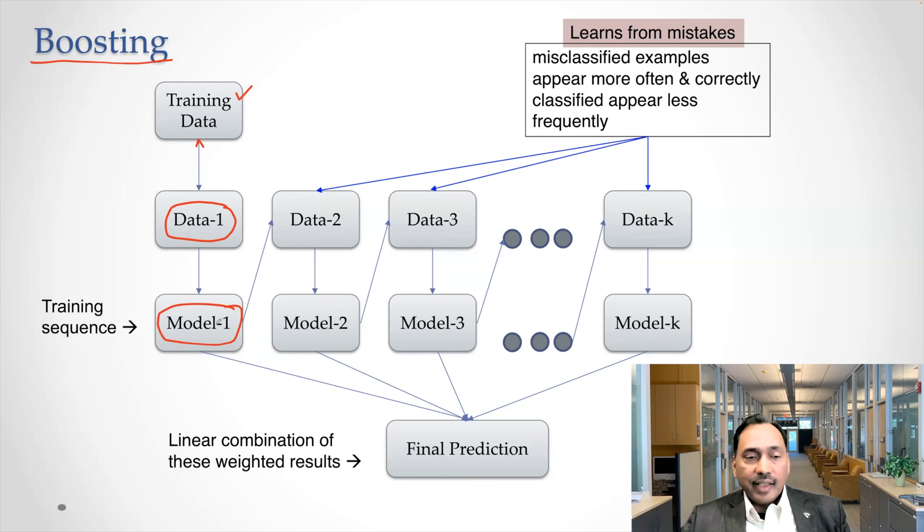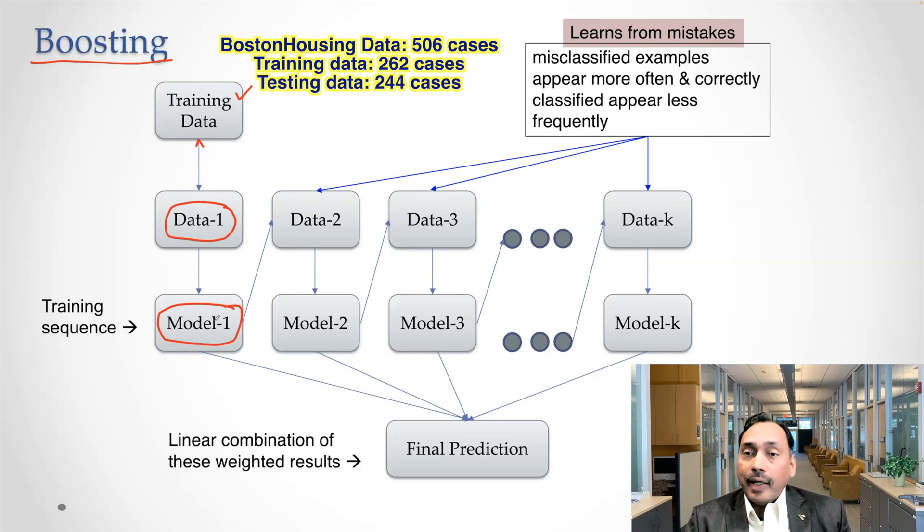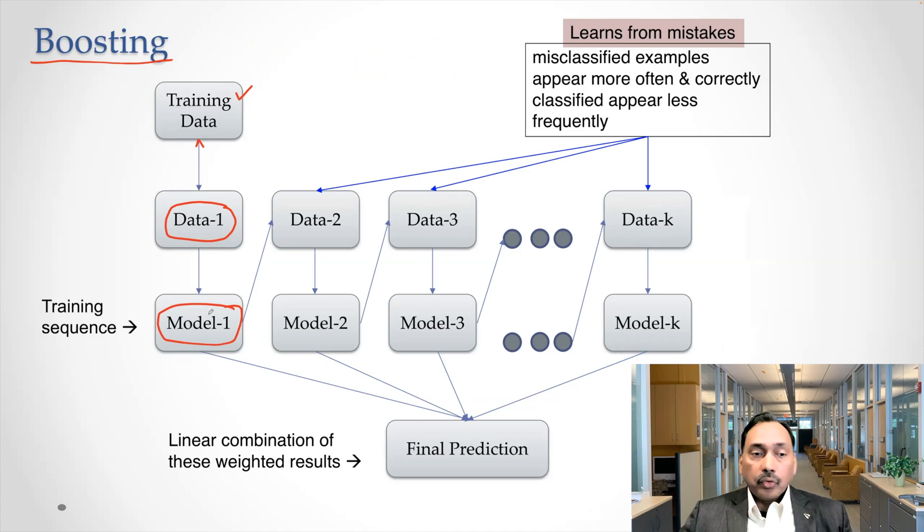So the way the ensemble concept kicks in is different compared to bagging and random forest. So what happens with model one is that we have 262 cases. And obviously there are some cases where the model does good. The actual values and predicted values are close enough. And there are some cases where it may not be. So that feedback goes in deciding second set of your data. Basically, a boosting model learns from its mistakes. It learns from its mistakes. So misclassified examples appear more often and correctly classified appear less frequently.